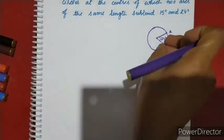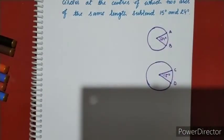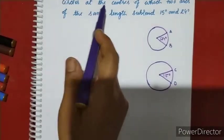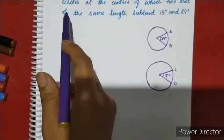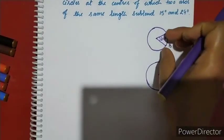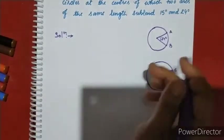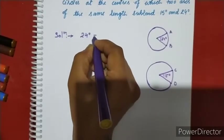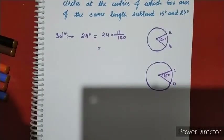We need to find the ratio of the radii given the arc lengths are the same. Convert 24 degrees to radians: 24 into pi by 180, which gives 2 pi by 15.